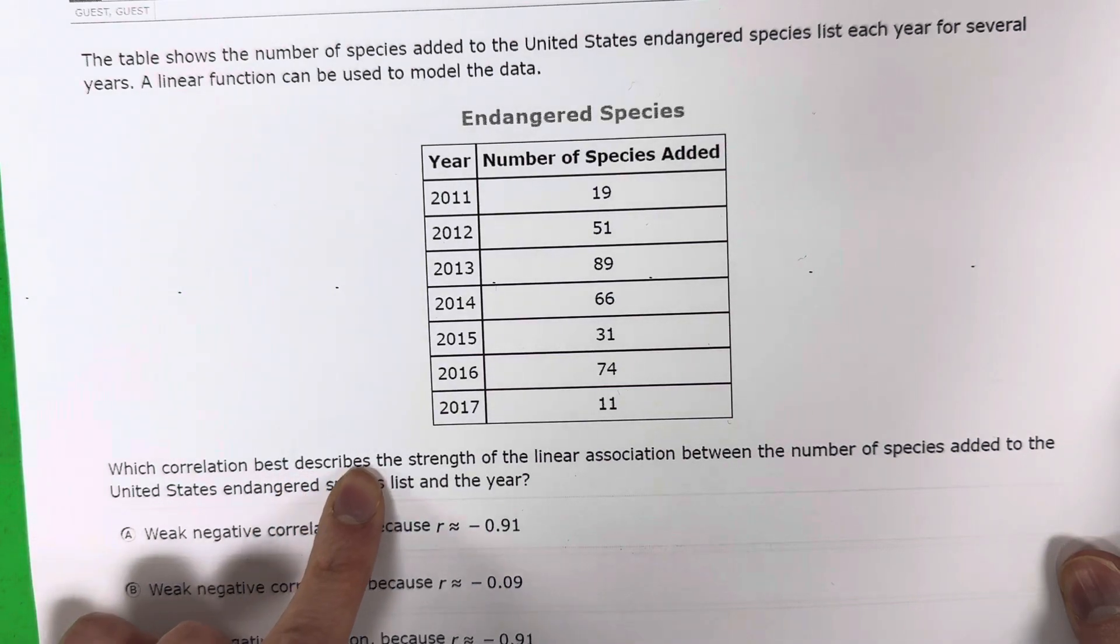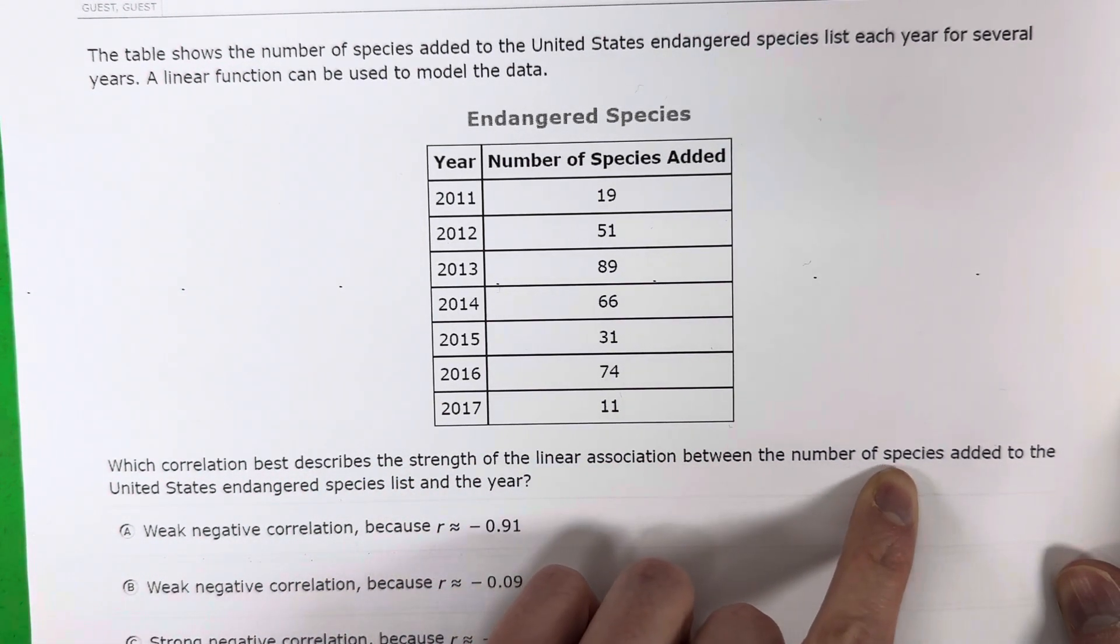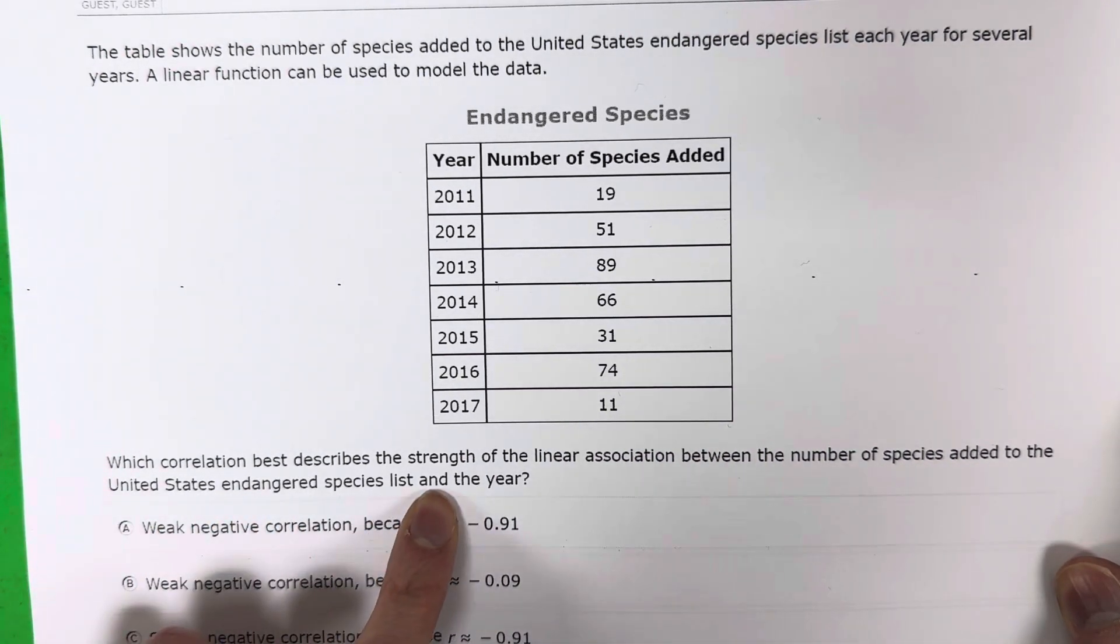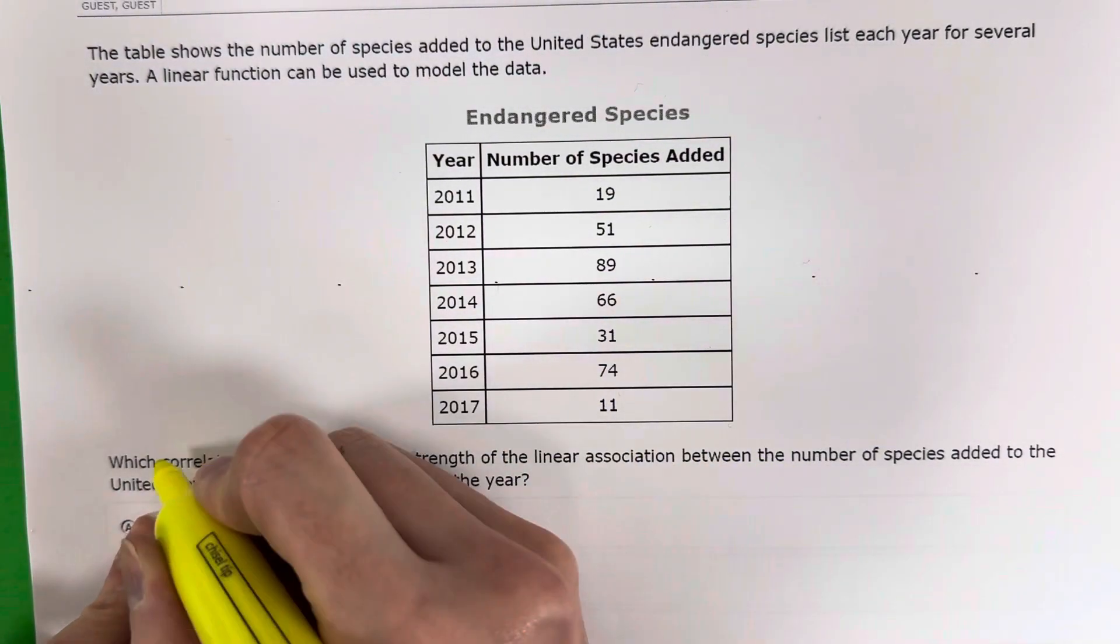Which correlation best describes the strength of the linear association between the number of species added to the United States Endangered Species list and the year. All right, so let's take a look here. It looks like the keyword is correlation.